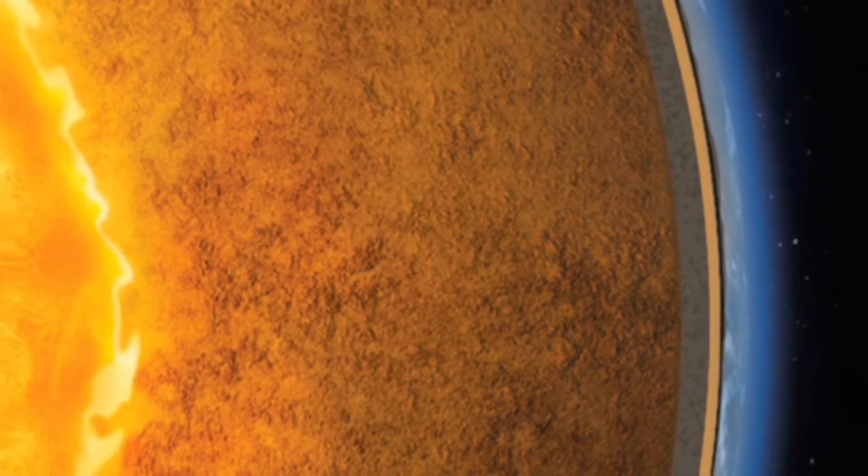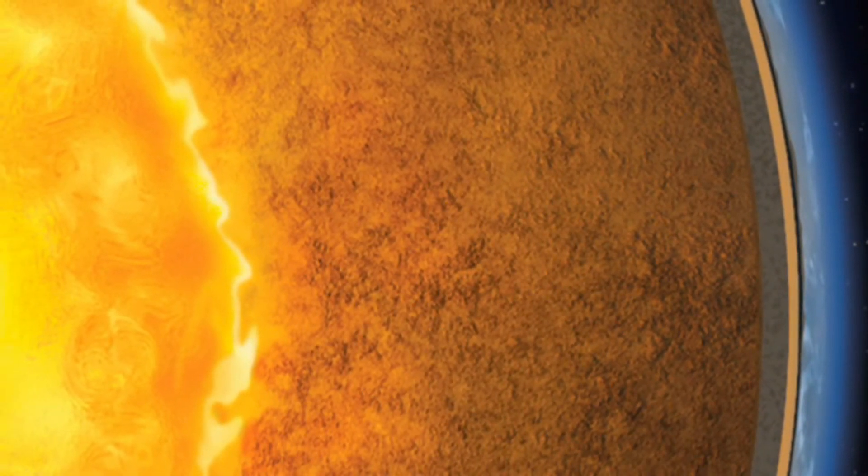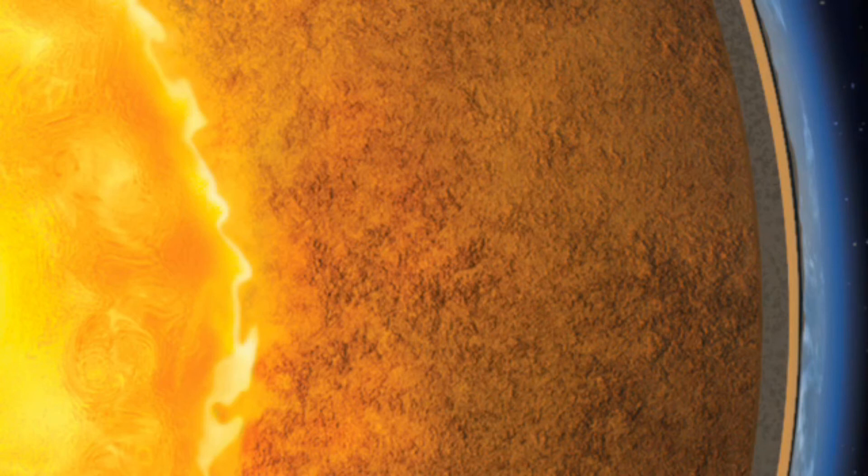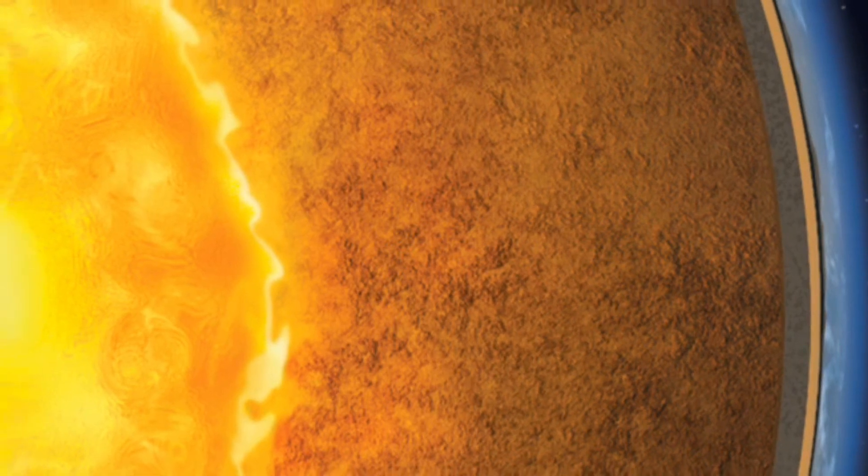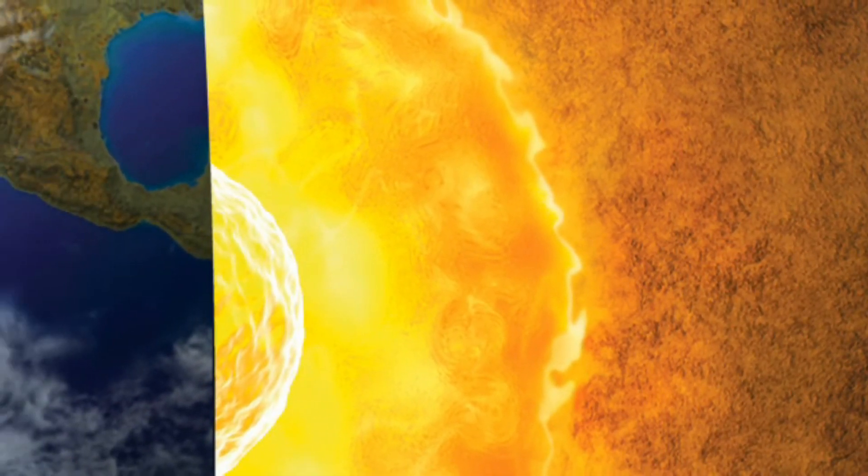Below that is the outer core. This is mostly liquid, made of nickel and iron. Below this again is the inner core. This is the hottest part of the Earth.